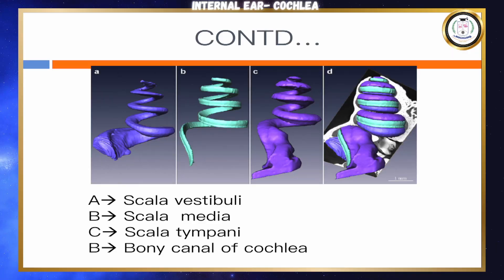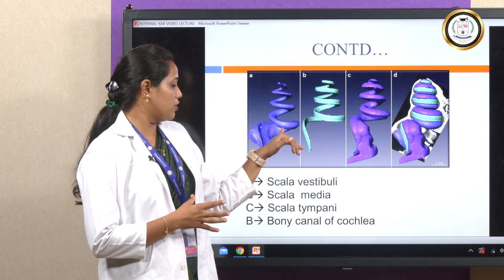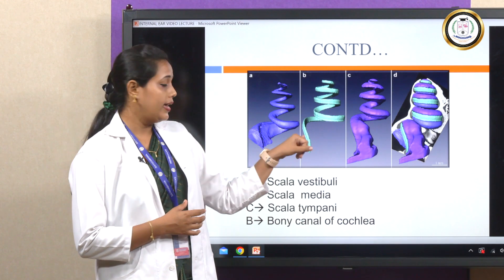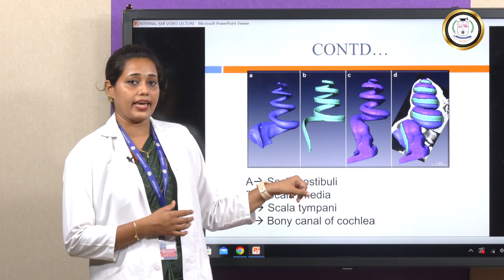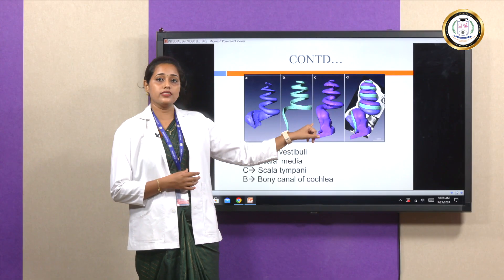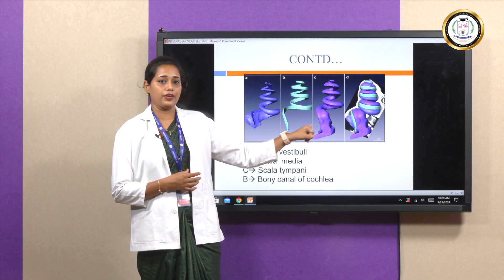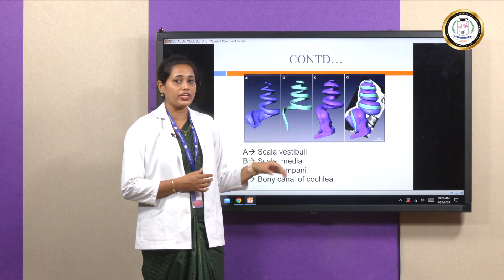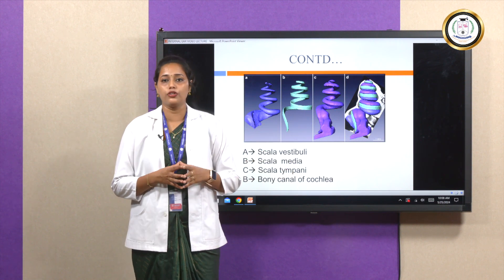The bony canal of the cochlea is composed of three compartments: the scala vestibuli, the scala media, and the scala tympani. These three together form the bony canal of the cochlea.